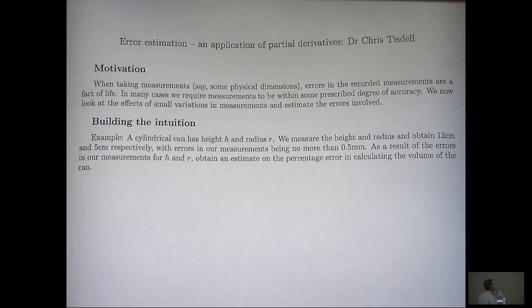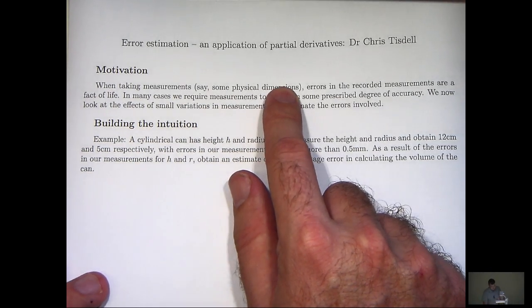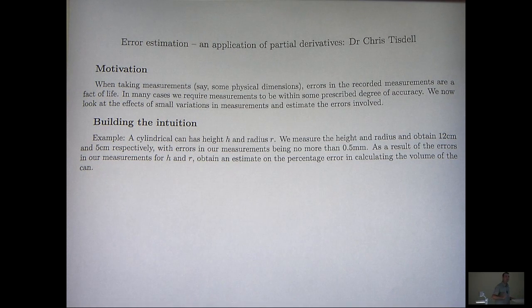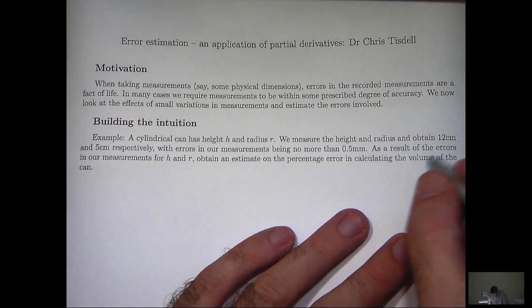Let's motivate the ideas though. When we take measurements, say some physical dimensions, errors in our recorded measurements are pretty much unavoidable. And in many cases what we're after is to obtain measurements to be within some prescribed degree of accuracy. And this video is going to look at the effects that those small variations, those small errors in measurements have in certain calculations.